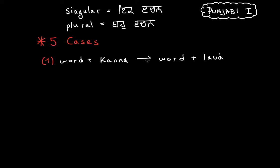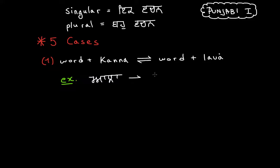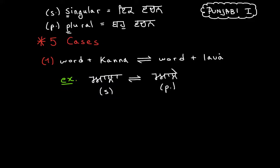We can go back from plural to singular by going backwards — that's where the equilibrium reaction notation comes in handy. For example, 'munda' (one boy) becomes 'munde' (more than one boy) by replacing the 'canna' with a 'lama.' Similarly, 'patta' becomes 'patte,' and 'chola' (a bag) becomes plural by replacing the 'canna' with a 'lama.' To go back to singular, replace the 'lama' with a 'canna.'